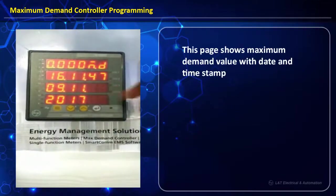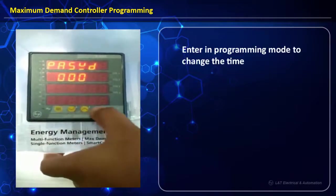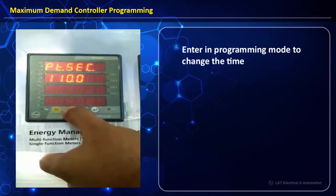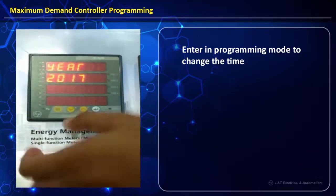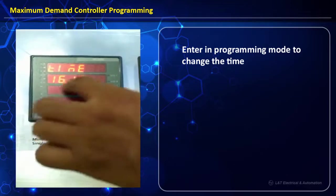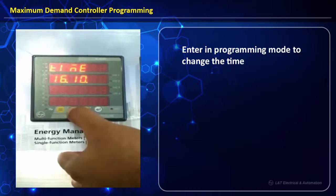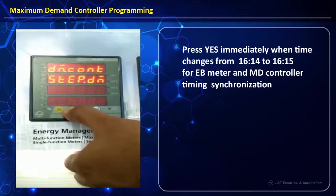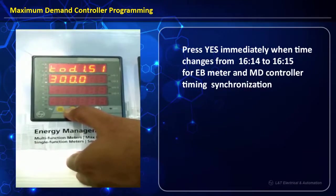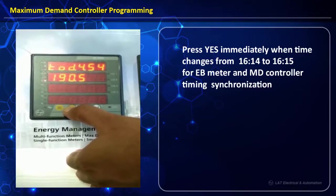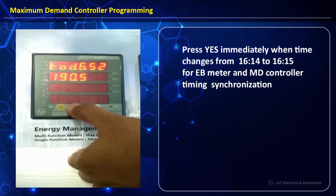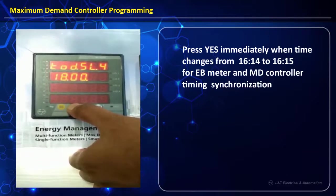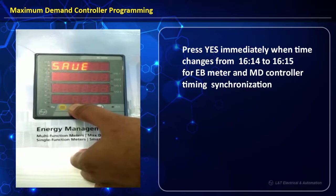You can see the maximum demand along with the time and date it occurred. We go into programming mode and enter the correct password, then navigate directly to the timing area for synchronization. The current time showing 4:12 is changed to 4:15. We confirm this value and navigate to the end of the programming window. We then wait until the EB meter changes from 4:14 to 4:15, and at that exact moment press the Yes button to ensure time synchronization between both meters.